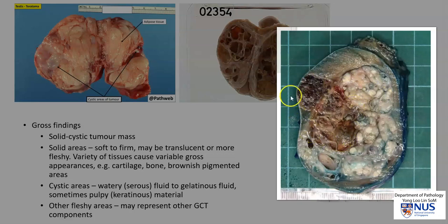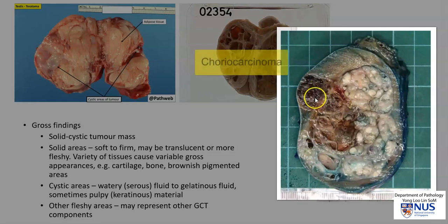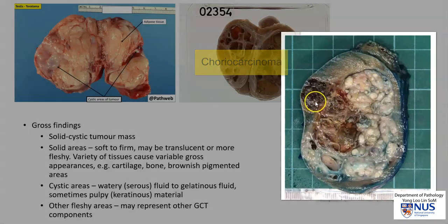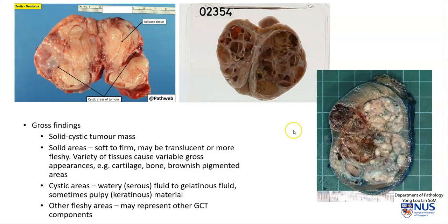And in this region, it looks a little bit different and very hemorrhagic. This component actually turned out to be choriocarcinoma. Choriocarcinomas usually have a hemorrhagic gross appearance because the tumor cells invade into blood vessels.